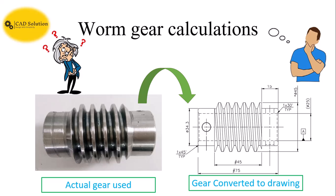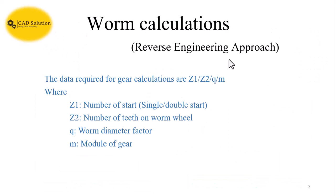The minimum data required for gear calculations is Z1, Z2, Q, and M. Z1 is the number of starts, whether it is single start or double start. By looking at the gear, you can simply recognize whether it is single start or double start.